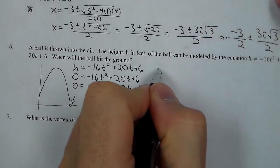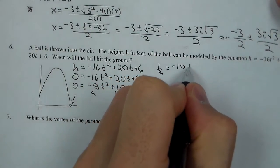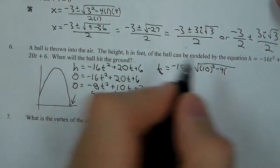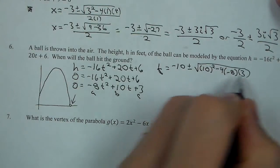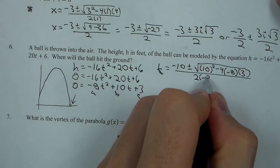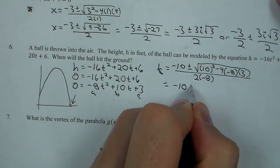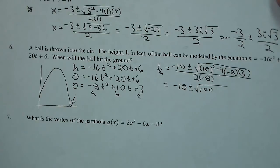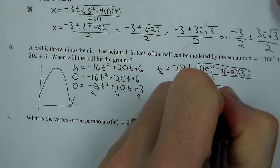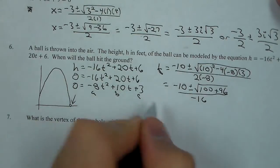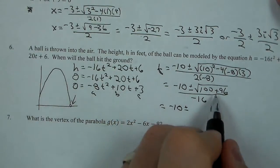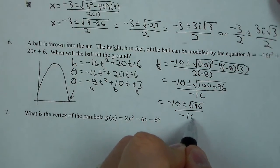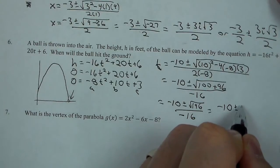So we have a, b, and c. We're going to say t equals negative 10 plus or minus the square root of 10 squared minus 4 times negative 8 times 3, all over 2 times negative 8. Inside the square root it becomes 100 plus 96 over negative 16. This is now negative 10 plus or minus the square root of 196. The square root of 196 is a perfect square — it turns out to be 14.